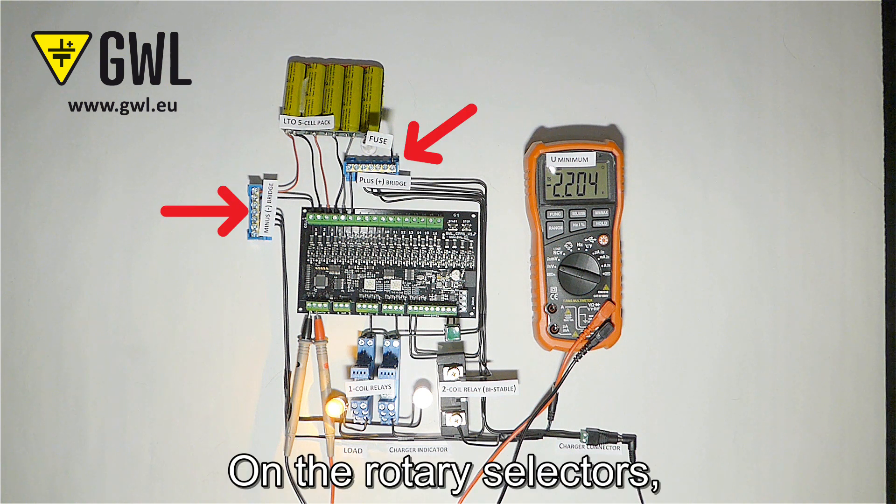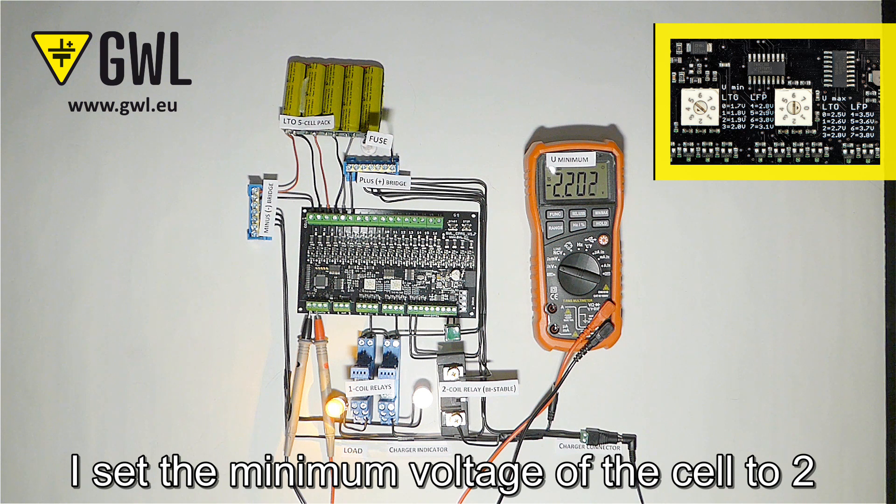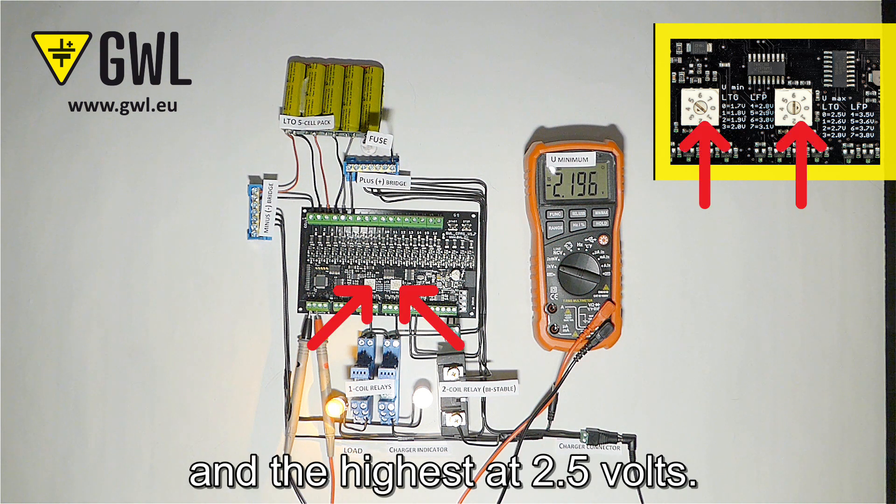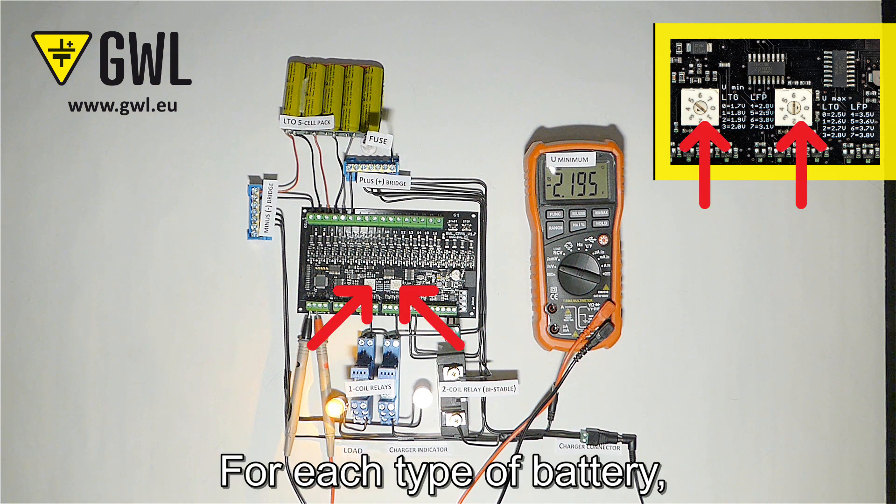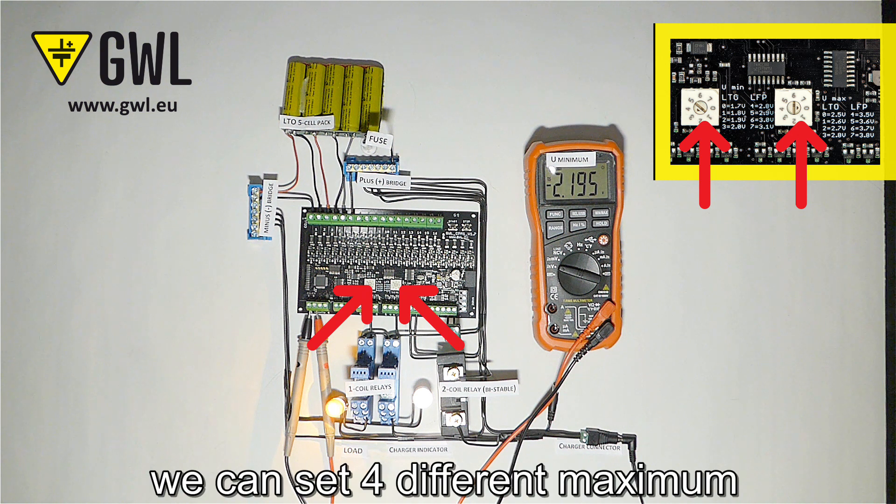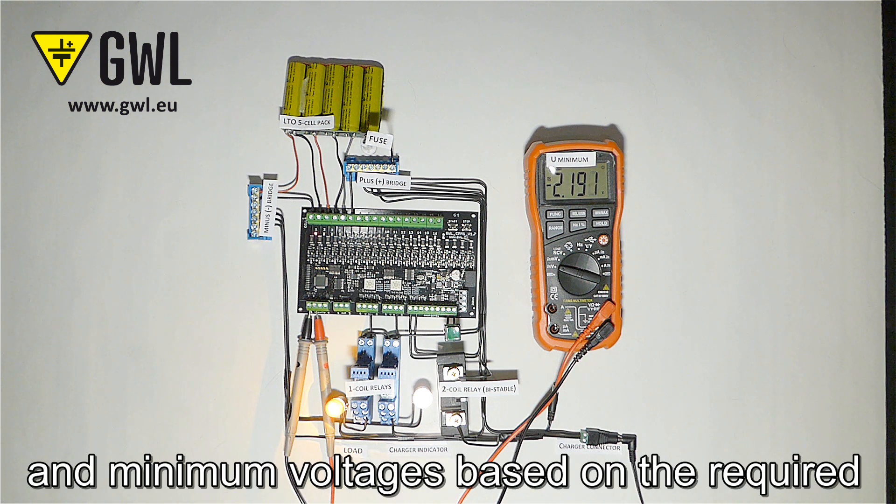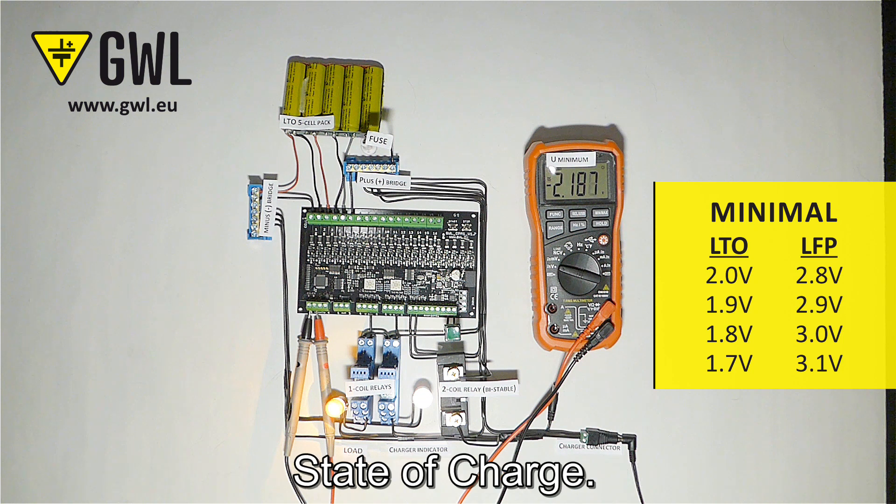On the rotary selectors I set the minimum voltage of the cell to 2 and the highest at 2.5 volts. For each type of battery we can set four different maximum and minimum voltages based on the required state of charge.